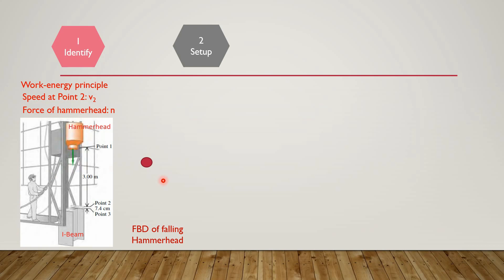We place a dot for the hammerhead. Two forces act on it: first, weight acting downward; second, frictional force acting upward with a magnitude of 60 Newtons. The velocity of the hammerhead is in the downward direction. We attach a set of coordinate axes: X axis and perpendicular to it is the Y axis. Next, we draw the free body diagram of the hammerhead when it is pushing the beam.